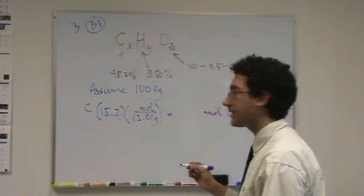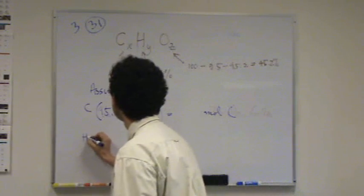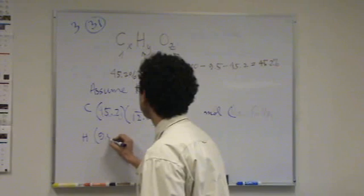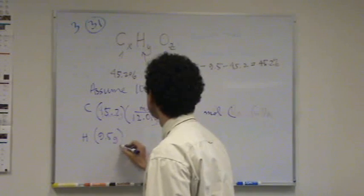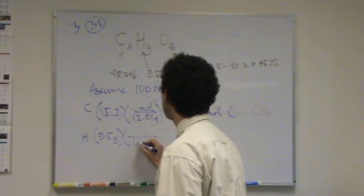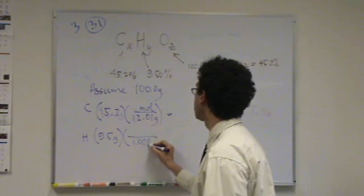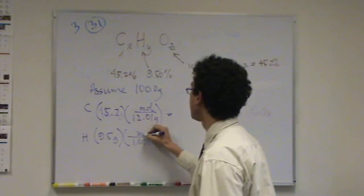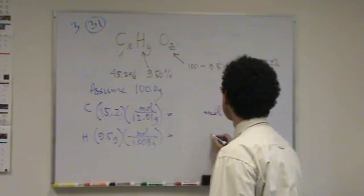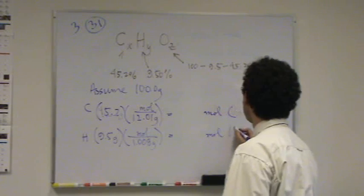We'll do the same for everything else. Hydrogen is, we're assuming, 9.5 grams. And its molar mass is 1.008 grams per mole, also from the periodic table. So this will convert to moles of hydrogen.